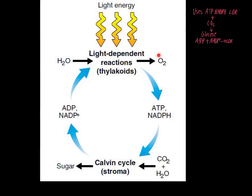In the light-dependent reactions, oxygen is produced — we talked about that when the water molecules split. The oxygen ends up leaving because it's a neutral particle and can go right through the membrane. Then we produce ATP and NADPH, which are used in the Calvin cycle combined with carbon dioxide to make sugars. That leaves us with ADP and NADP+, which go back to the light-dependent reactions to be recharged. That's what makes it a cycle and connects the two halves of this entire process together.